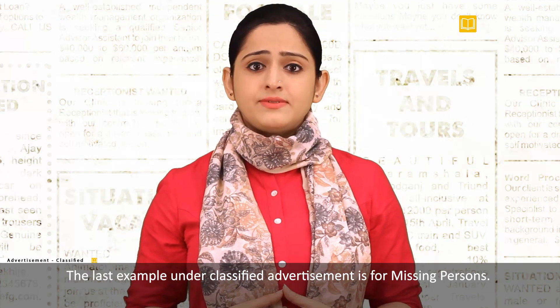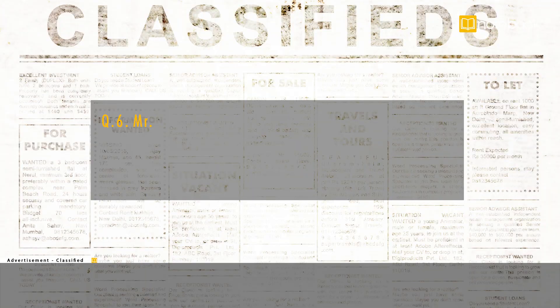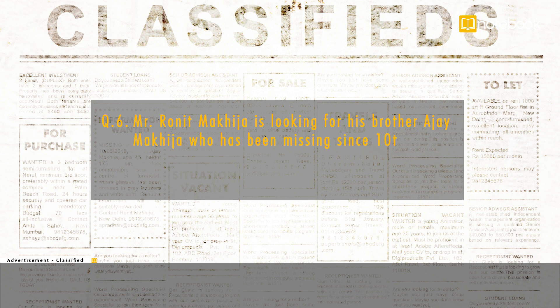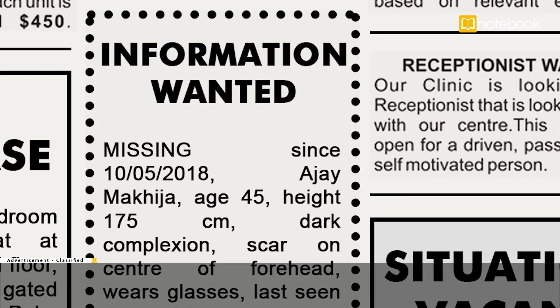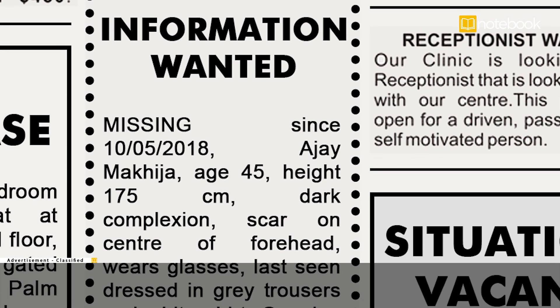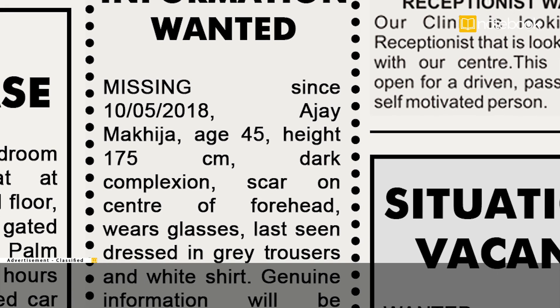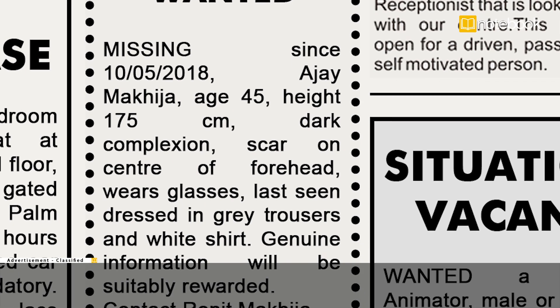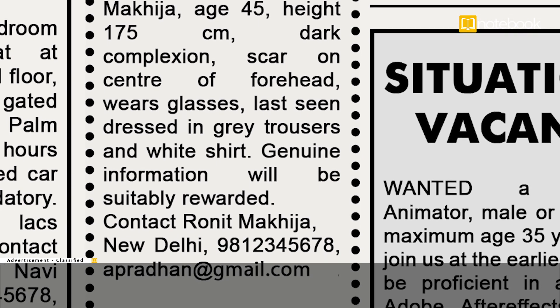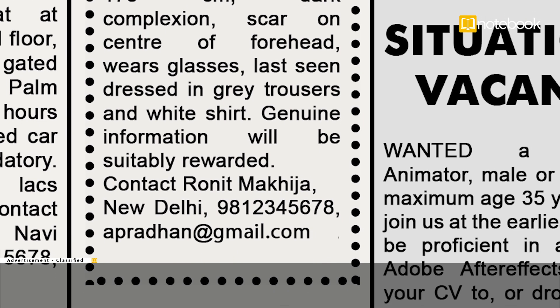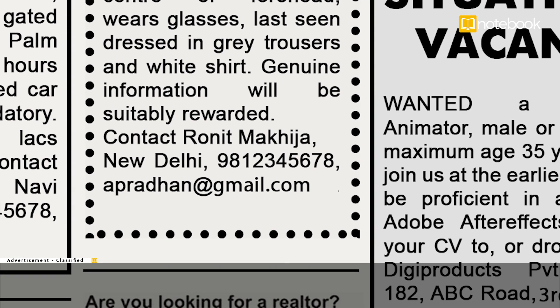The last example under classified advertisement is for missing persons. Mr. Ronit Makija is looking for his brother Ajay Makija who has been missing since 10th May 2018. Help him write a classified advertisement for a newspaper. Information Wanted: Missing since 10-5-2018 — Ajay Makija, age 45, height 175 cm, dark complexion, scar on centre of forehead, wears glasses, last seen dressed in grey trousers and white shirt. Genuine information will be suitably rewarded. Contact Ronit Makija, New Delhi, 9812345678, apradhan at gmail.com.